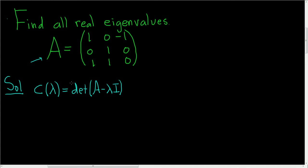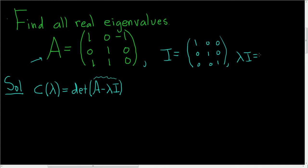This is the characteristic polynomial of A. I is the 3×3 identity matrix — the matrix with 1s along the diagonal and 0s everywhere else. Multiplying it by λ gives λI: each entry is multiplied by λ, so λ times 1 is λ and λ times 0 is 0, giving us λ on the diagonal and 0s elsewhere.